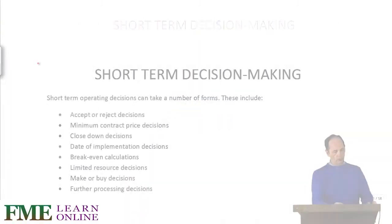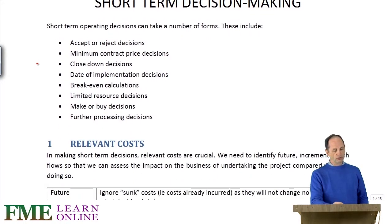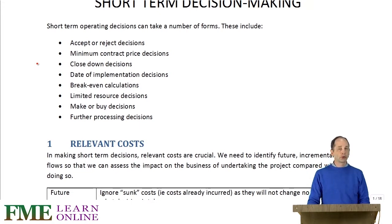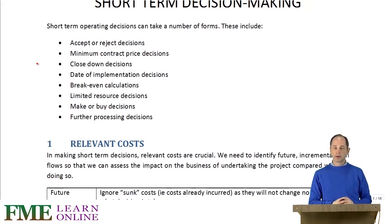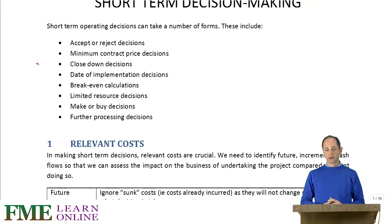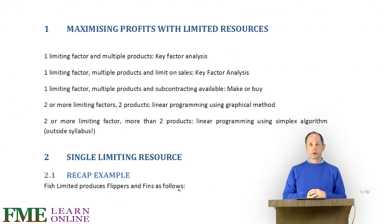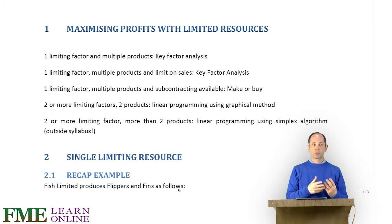If we look at the material here, we can see that questions in this area might include whether or not to accept or reject certain possibilities. It might look at the minimum price we need to charge on a contract to make it viable, whether to keep a certain division or department open or close it down, when to implement a certain project, or how much we need to produce to break even. What we don't want to be doing is assuming that fixed costs are increasing.